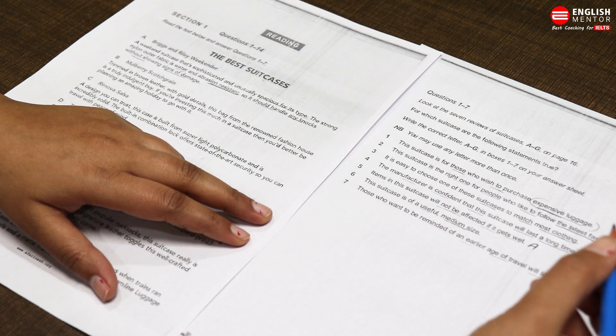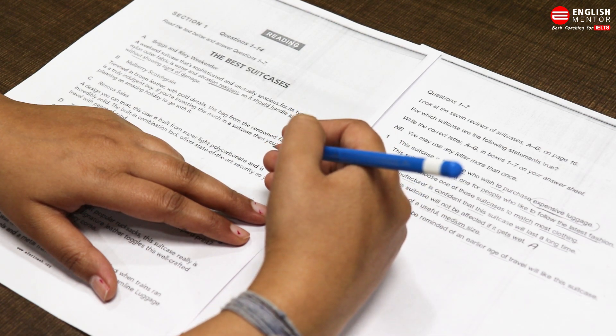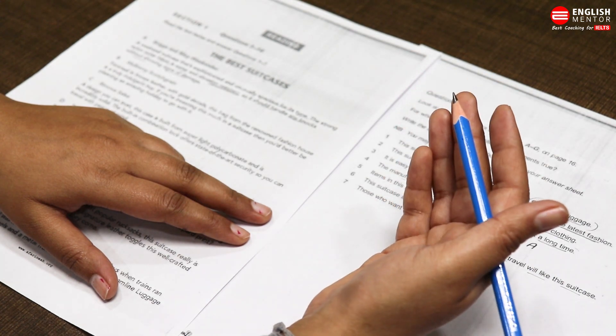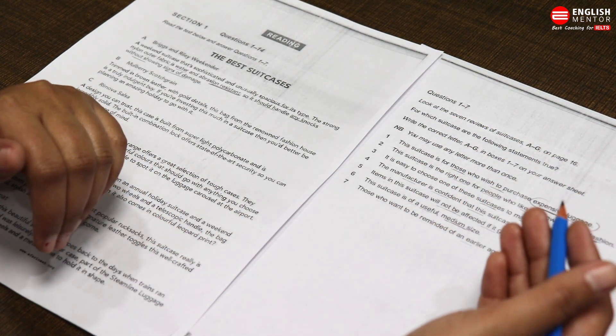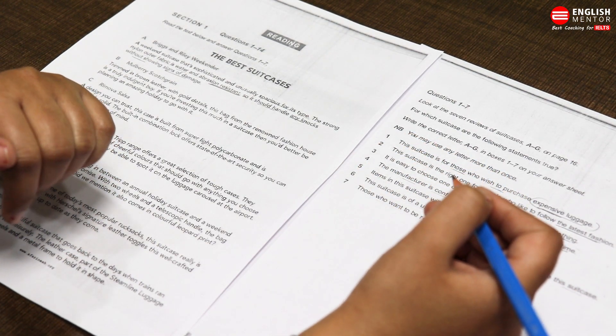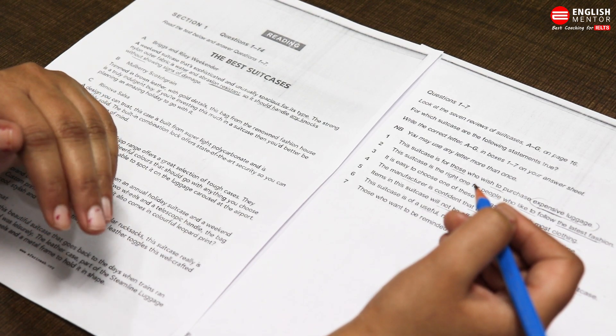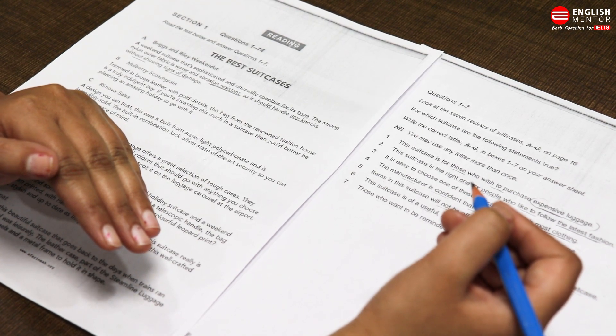RUP method se, aapka sabse pehle jo question hai, wo solve hua hai, fifth. Kai baar students kya karte hain, first question read karte hain aur usse ke liye search karna shuru kar deti hain, to isse unka bahut sara time waste ho jata hai. Aur yeh bhi hota hai ki unko first paragraph mein first ka answer nahi milta hai, to wo assume kar leti hain ki jo reading ka level hai, wo tough hai. Therefore, I suggest you to apply this method for solving the reading. Ab aapka fifth question solve bhi ho gaya hai, bahut beautifully. Aur yeh cheez ko bhi aapne dhyan mein rakhna hai ki yeh koi thumb rule nahi hai ki aapko questions ke jo answers hain, jo locations hain, wo sequentially milengi. It can be in jumbled manner also.